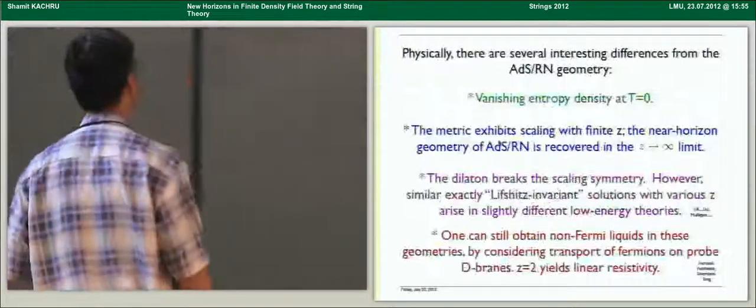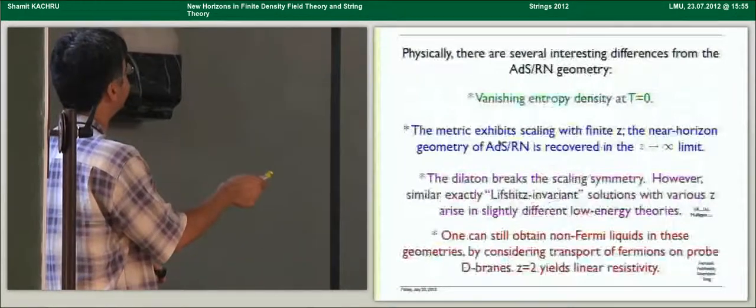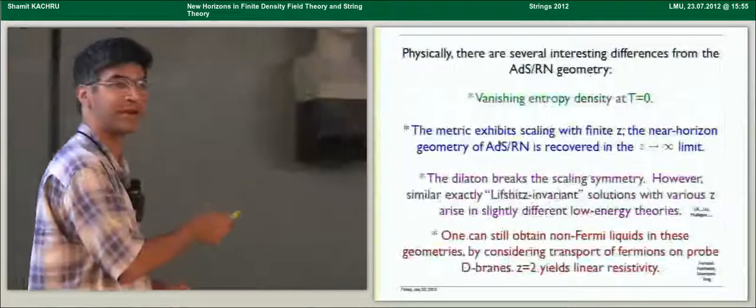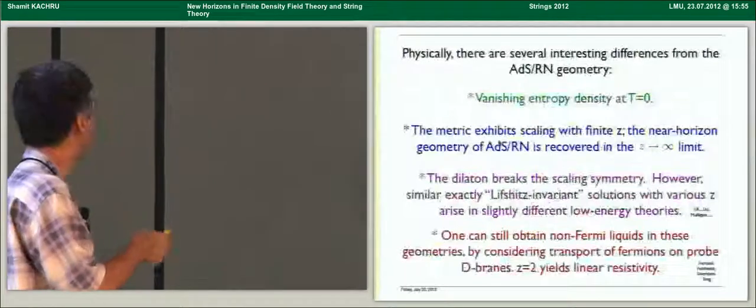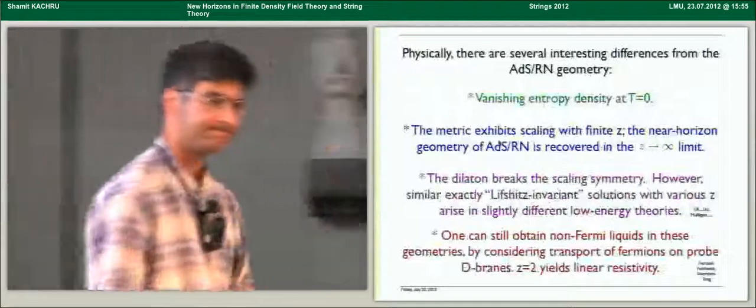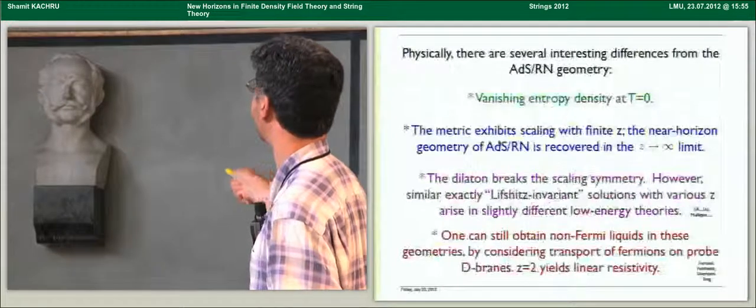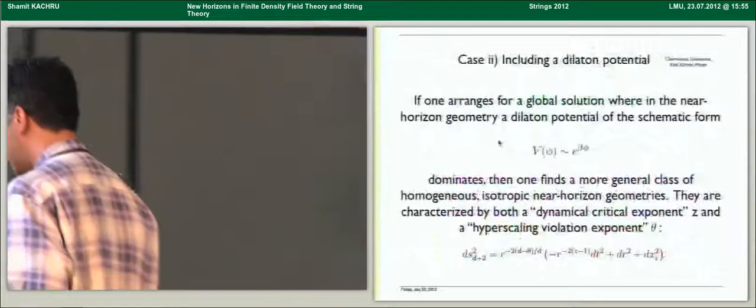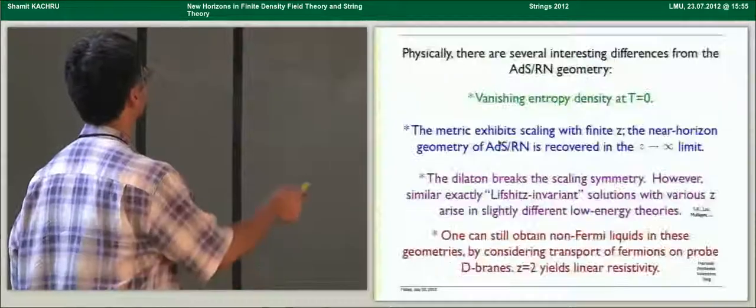And I should point out that by techniques not so different from what Andreas discussed, even in these geometries, as opposed to AdS2, you can still obtain non-Fermi liquids which have linear resistivity in their leading transport by putting probe fermions, sorry, probe d-branes in the background of this metric and studying the transport of their fermions, which was done by these authors. But again, the linear resistivity is not a prediction. There's a parameter, and as you vary the parameter, you vary the response.